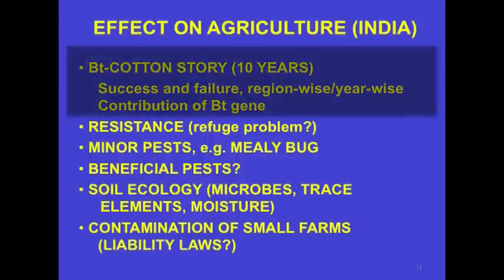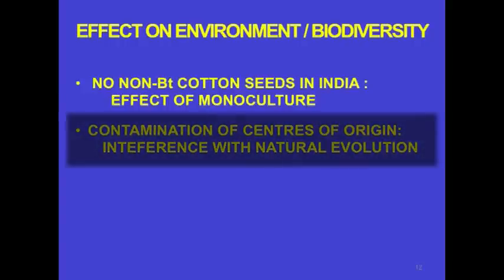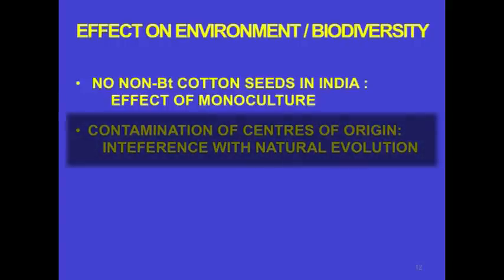There was development of resistance to the BT gene in Gujarat and Punjab. In Punjab, minor pests like mealy bark came up. The density of some beneficial insects has gone down. There is an effect on soil ecology—Gujarat farmers say that where BT cotton has been used to the largest extent, the soil has become incapable of sustaining any other crop. There is a problem of contamination of small farms growing organic cotton or organic food, and we have no liability laws to protect their interests. Today, strangely, we have no non-BT cotton available in India—it's just gone out of the market—creating a kind of monoculture that is obviously undesirable if we want to maintain our biodiversity.